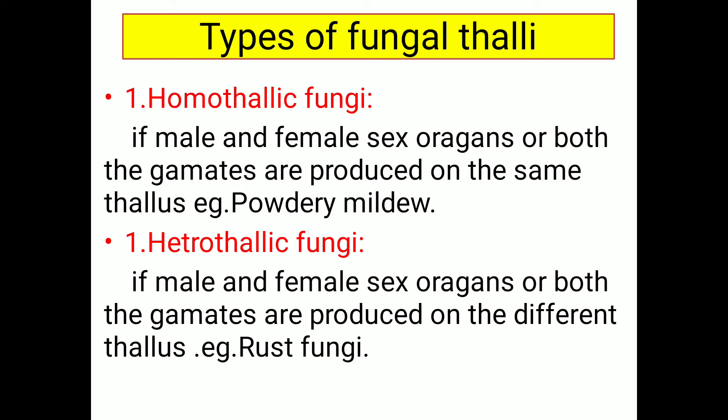First one is homothallic fungi and second one is heterothallic fungi. Homothallic fungi means if the male and female sex organs of the fungi — both gametes — are produced on the same thallus, that means on the same body of the fungus. Homo means same. Next, heterothallic fungi — hetero means different. If male and female sex organs or both gametes are produced on different thalli or different fungal structures, then it is called heterothallic fungus. For example, rust fungi, which have different mating types.